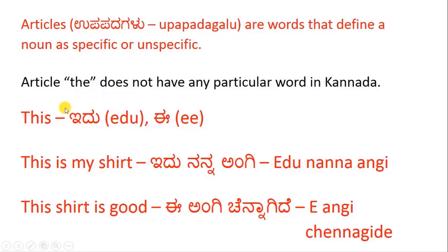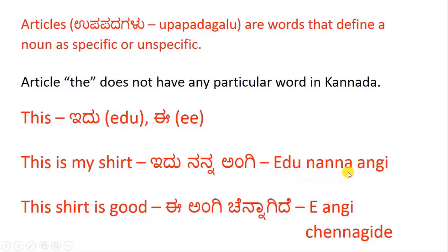There are a few articles that we are going to study in this lesson. Let us start with 'this.' This is 'idu' or 'ee' in Kannada. Let us take an example: 'This is my shirt' — Idu nanna angi. Angi is shirt, nanna is my, and idu is this.